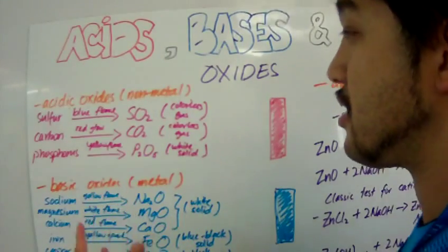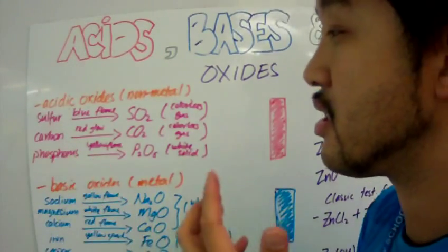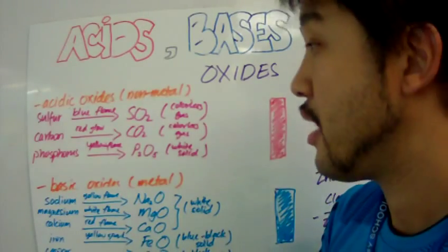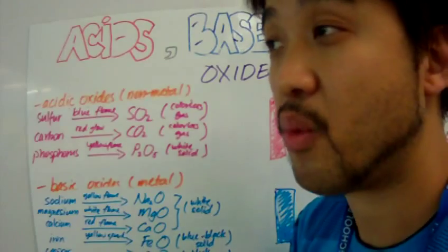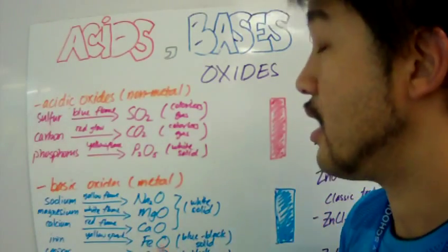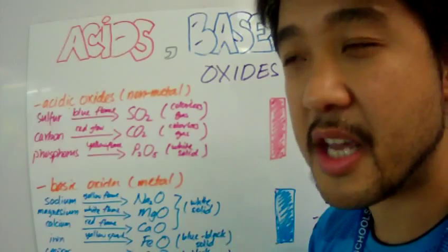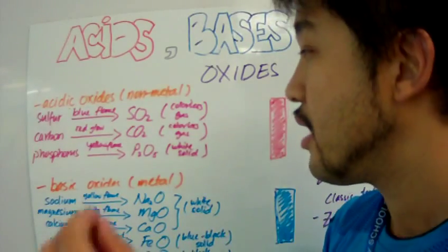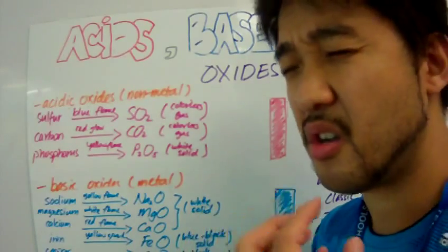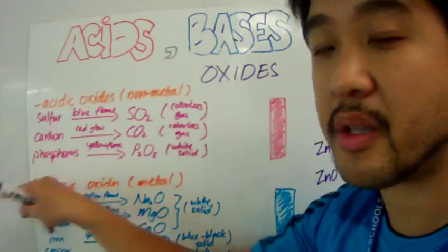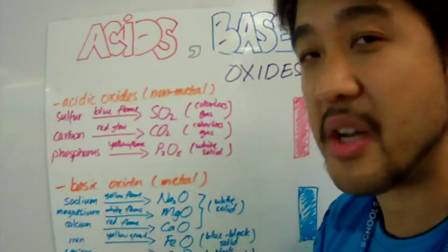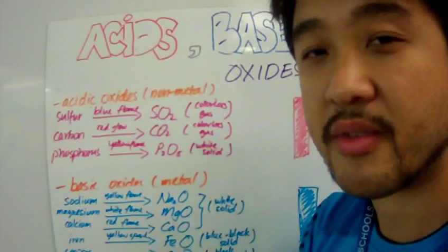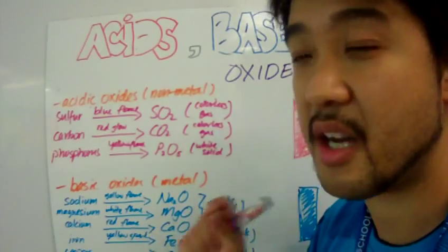How do you make these oxides? You get sulfur and burn it in the presence of oxygen, and you get blue flames. What you get is sulfur dioxide, which is a colorless gas. You can do the same with carbon - you burn it, you get a red glow, and you get carbon dioxide, which is also a colorless gas. Then you can do it with phosphorus. You burn it in the presence of oxygen, you get a yellow flame, and you get diphosphorus pentoxide, which is a white solid.